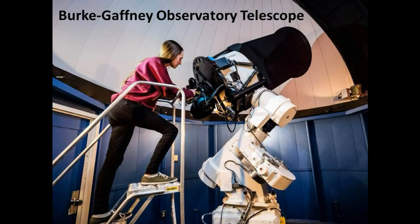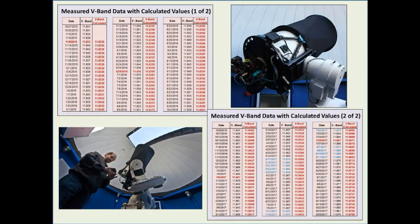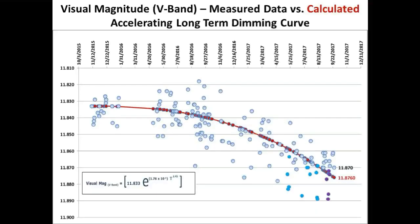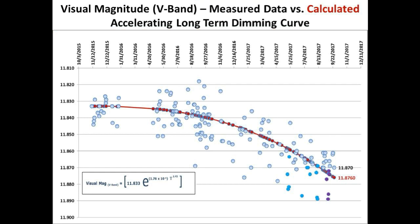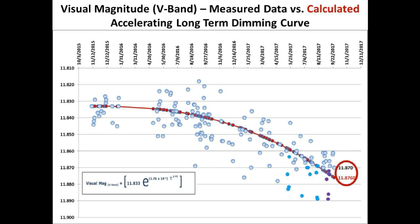These measurements were taken using the Burke-Gaffney Observatory telescope at the campus of St. Mary's University in Nova Scotia, Canada. These V-band measurements take us from October 27th, 2015 to September 26th, 2017. This is the visual magnitude V-band measured data versus the calculated accelerating long-term dimming curve, showing an updated scatter plot. The red curve is the calculated accelerating long-term dimming profile based on our original equation. The latest measured V-band magnitude was 11.870, with a corresponding calculated V-band magnitude of 11.8760 — a 0.6 percent difference between the two values.